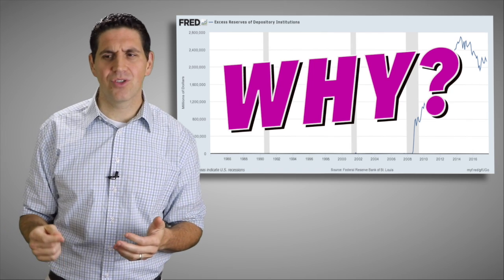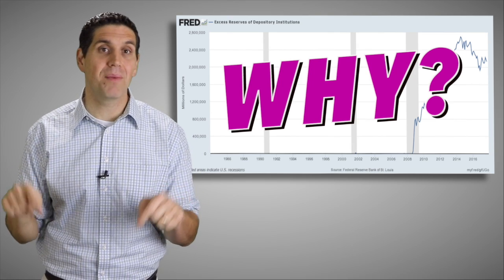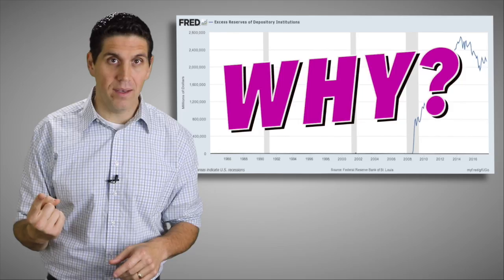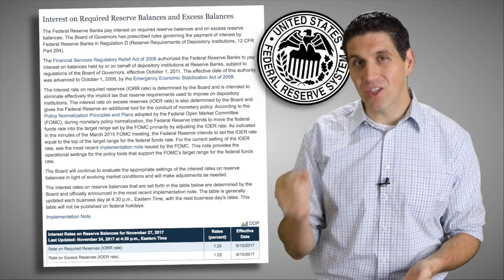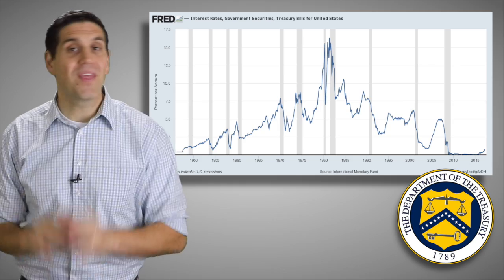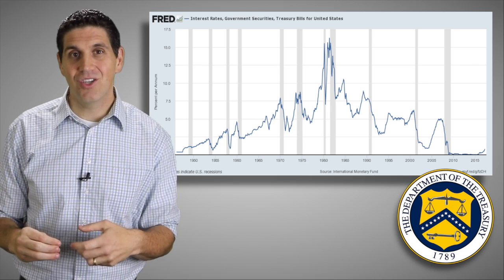Why aren't banks just lending out that money? It's complicated — I put an article from a Fed economist in the description below. The quick answer is two things: number one, the Federal Reserve now pays banks a really small interest rate for depositing their excess reserves; and number two, the interest rate that banks can earn on other low-risk options like treasury bills or lending to other banks is so low that it just makes more sense to deposit the money with the Fed. It makes sense, but it's still unprecedented — these are not normal times. We've never seen this before.